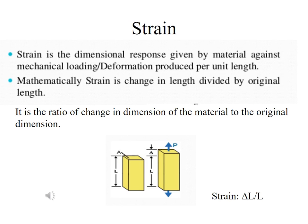Next, what is strain? Strain is the dimensional response given by a material against mechanical loading — the deformation produced per unit length. Mathematically, strain is the change in length divided by the original length. It is the ratio of the change in dimension to the original dimension of that material. Strain = ΔL / L, where ΔL is the change in length and L is the original length before applying the force.